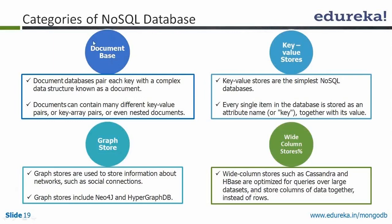A document database pairs each key with a complex data structure known as a document — so there are key-value pairs where the value can be a complex document. Documents can contain many different key-value pairs, key-array pairs, or even nested documents — you can have a document inside a document. If you have related data, you can club it into a single document. I'll show how to derive value using embedding or nesting documents in the schema design module.